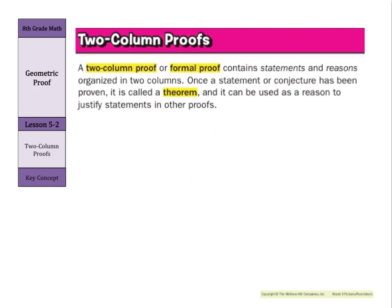A two-column proof, or formal proof, contains statements and reasons organized in two columns — this may be a little easier to see than the paragraph proof. Once a statement or conjecture has been proven, it is called a theorem, and it can be used as a reason to justify statements in other proofs.